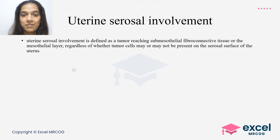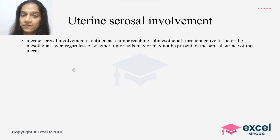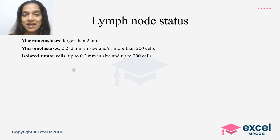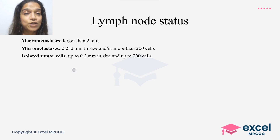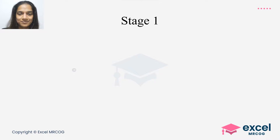Uterine serosal involvement means the tumor reaches the sub-mesothelial fibroconnective tissue or the mesothelial layer, regardless of whether tumor cells are present on the serosal surface. Regarding lymph node metastasis, macrometastasis is larger than 2 mm, micrometastasis is 0.2 to 2 mm in size or more than 200 cells, and anything less is considered isolated tumor cells, which do not upstage the tumor.